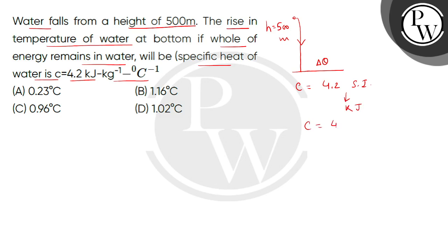So first of all, we will convert this to 4.2 multiplied by 10 to the power 3 Joule per kg per degree celsius.